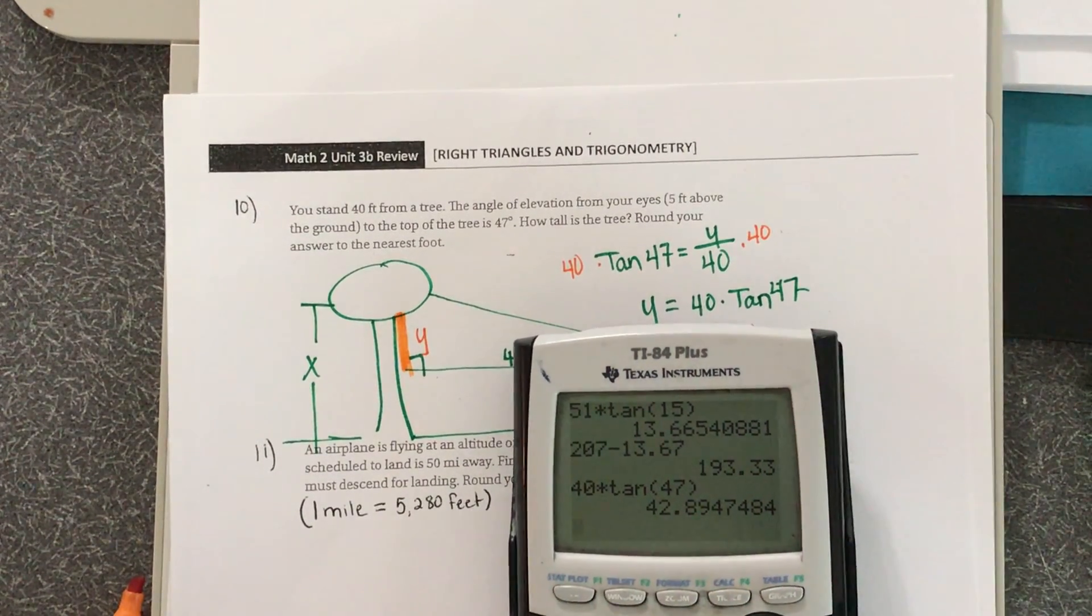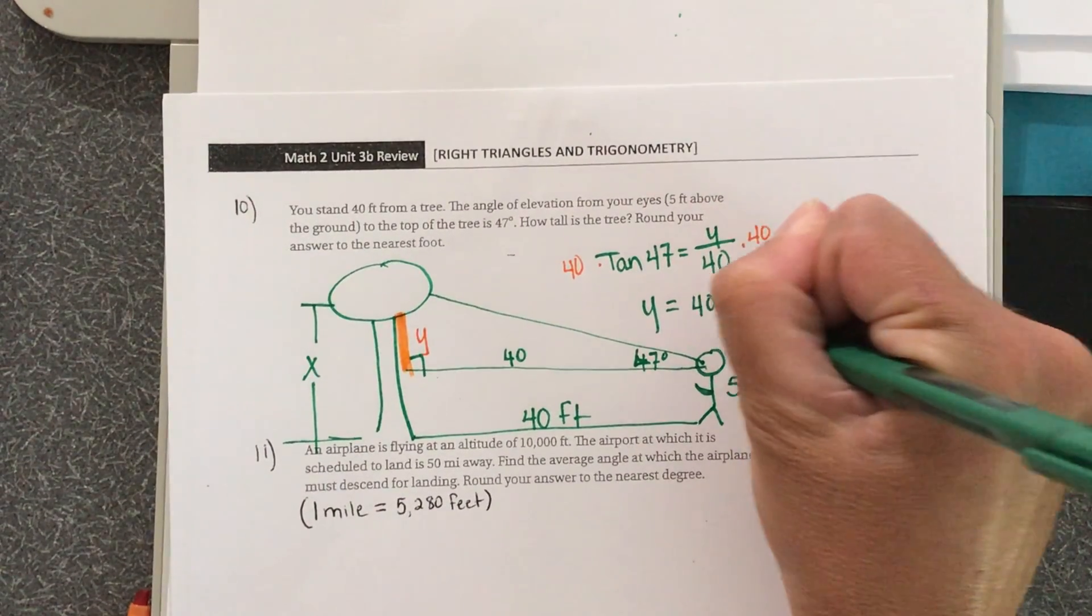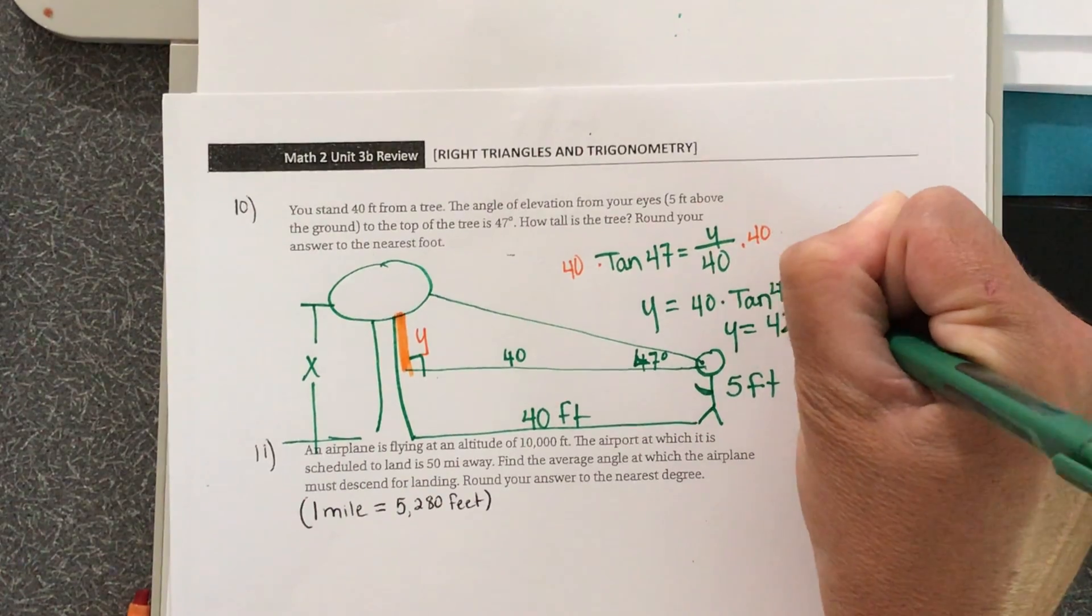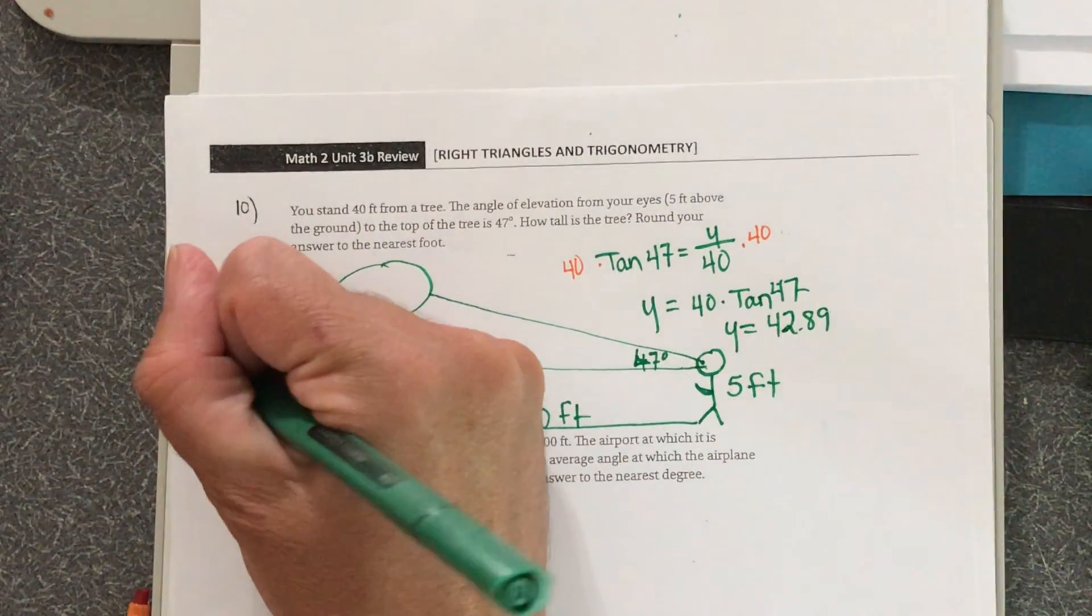So Y is about 42.89 feet. We can't forget that we've got to add the 5 feet to that.